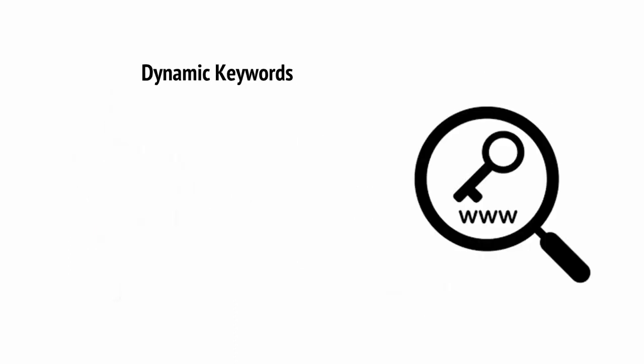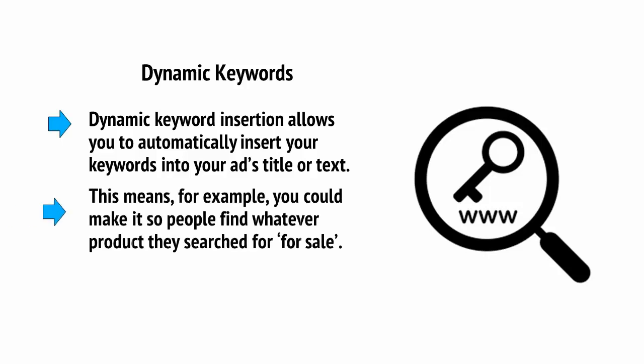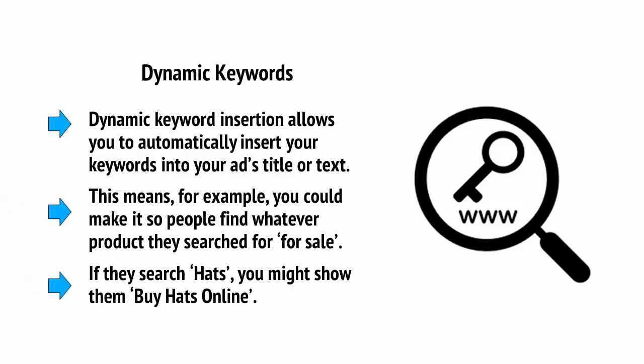Then there are dynamic keywords. Dynamic keyword insertion allows you to automatically insert your keywords into your ad's title or text. This means that, for example, you could make it so people find whatever product they search for listed for sale — or if they search 'hats,' then you might show them 'buy hats online.'